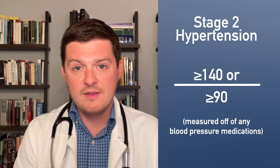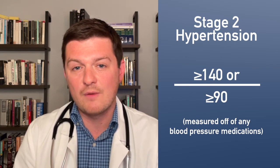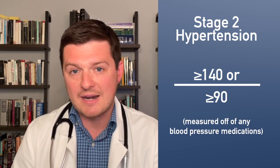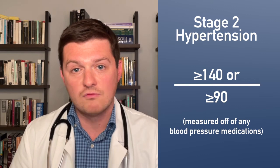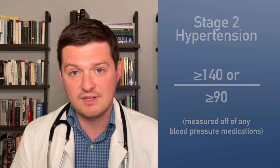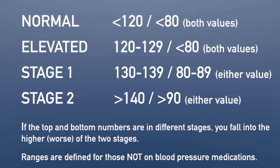Whatever tier you're in, the highest tier applies. So if your top number is in the stage 1 range but your bottom number is in the stage 2 range, you have stage 2 hypertension — meaning a diastolic greater than 90, regardless of the top number, is stage 2. To summarize the four stages: normal is less than 120 and less than 80; elevated is 120–129 on top and less than 80 on the bottom; stage 1 is 130–139 on top or 80–89 on the bottom; and stage 2 is 140 or higher on top or 90 or higher on the bottom.